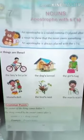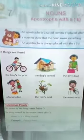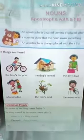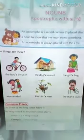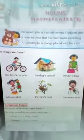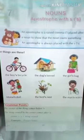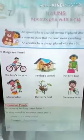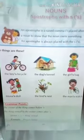Whose kennel? The dog's kennel — after 'dog,' apostrophe S is there. Another example: the girl's bag — after 'girl,' apostrophe S. Girl's bag. Mona's doll. The bird's nest. The man's watch.